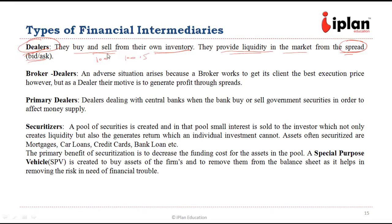For example, if the bid is 100 and the offer/ask is 100.5, an investor wanting to buy pays 100.5 and one wanting to sell receives 100. The 0.5 is the gain of the dealer — that is the bid-ask spread — and that is how they make profit in return for providing liquidity to the market.